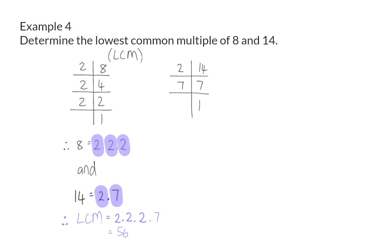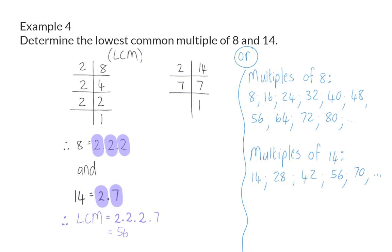Here, you can also choose to determine the lowest common multiple using inspection. When you write down the multiples of 8 and the multiples of 14, you will see that the lowest common multiple is 56.